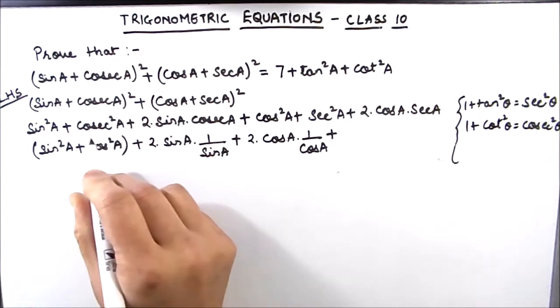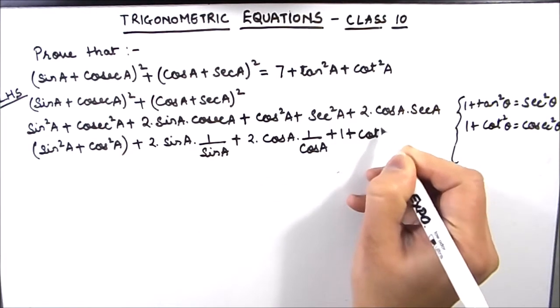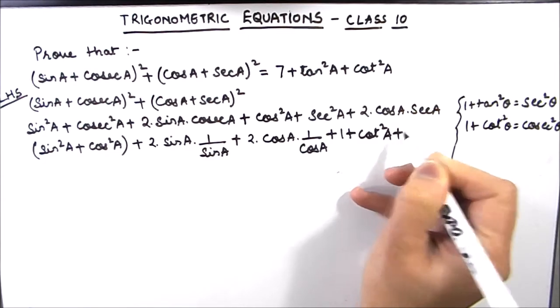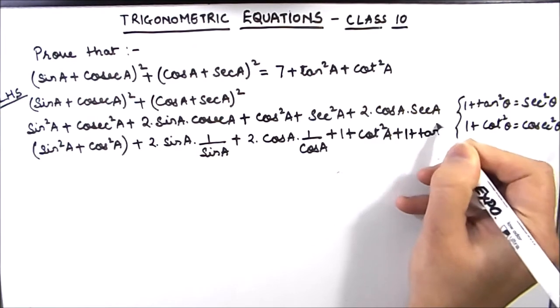So we are going to replace this cosec² A by 1 + cot² A and this sec² A by 1 + tan² A.